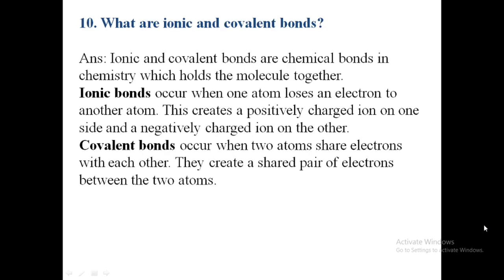Tenth question: what are ionic and covalent bonds? Ionic and covalent bonds are chemical bonds in chemistry which hold the molecule together. Ionic bonds occur when one atom loses an electron to another atom, creating a positively charged ion on one side and a negatively charged ion on the other. Covalent bonds occur when two atoms share electrons with each other, creating a shared pair of electrons between the two atoms.